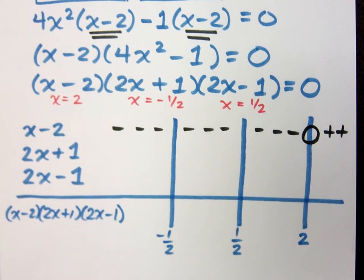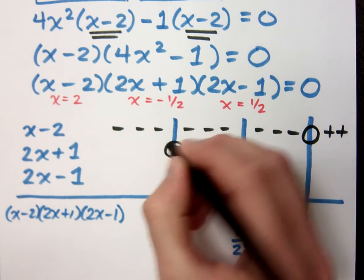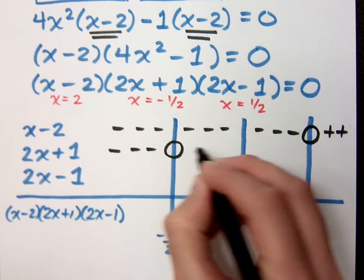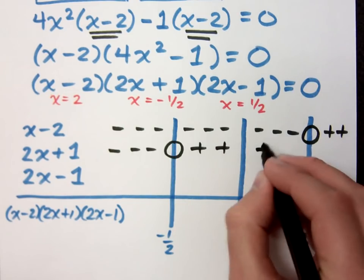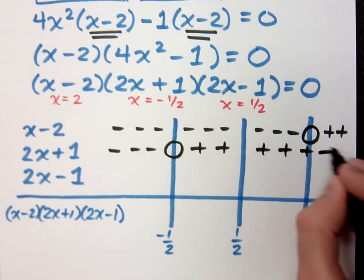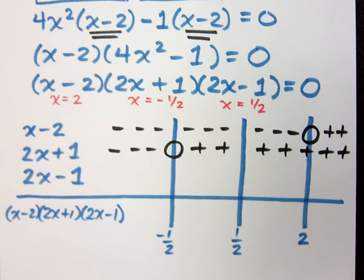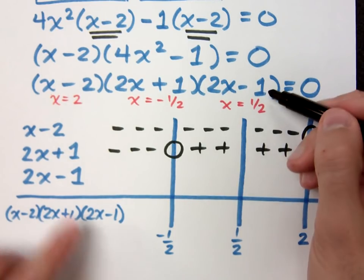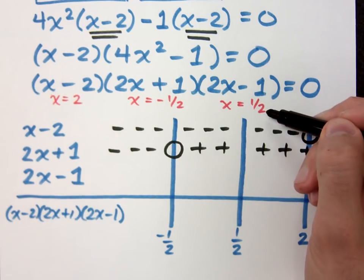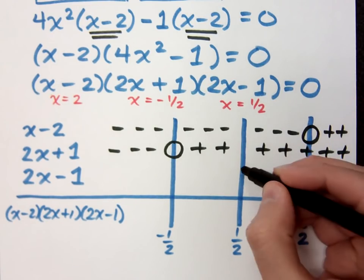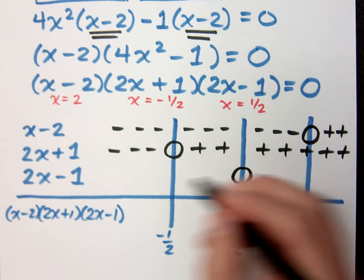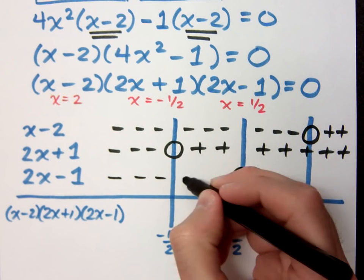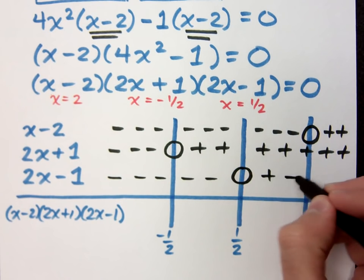Well, that guy was x equals negative 1 half. So we're 0 right here, negative on the left, positives on the right, and something very similar to the 2x minus 1. His gatekeeper, you see, matches up with x equals 1 half. So he's 0 right here, negative on the left, and positive on the right.